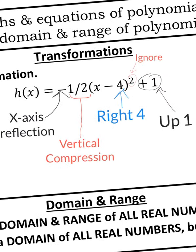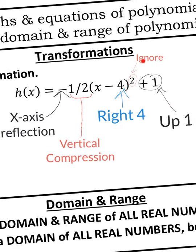The next one. Again, I circled the power and I just wrote ignore. So plus 1 on the outside went up 1. Minus 4 goes right 4 because that was on the inside. Then I'm multiplying 1 half on the outside, so that's a vertical compression. And a negative on the outside is an x-axis reflection.